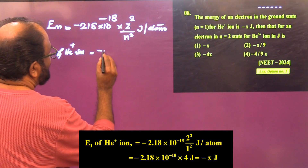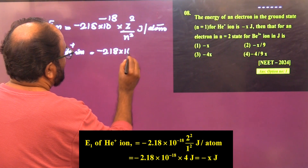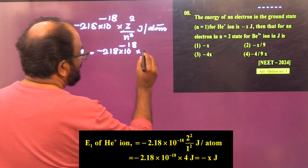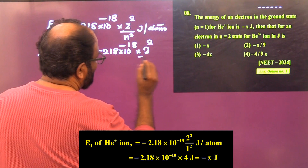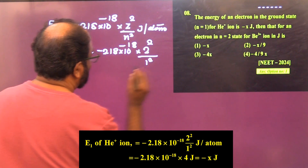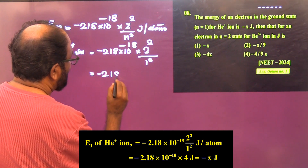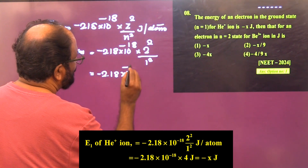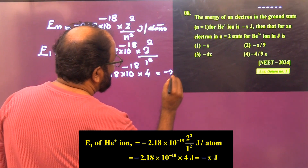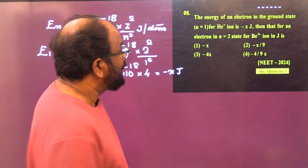E1 of He+ ion = −2.18 × 10⁻¹⁸ × 2²/1² = −2.18 × 10⁻¹⁸ × 4, and this is given as −x joules.